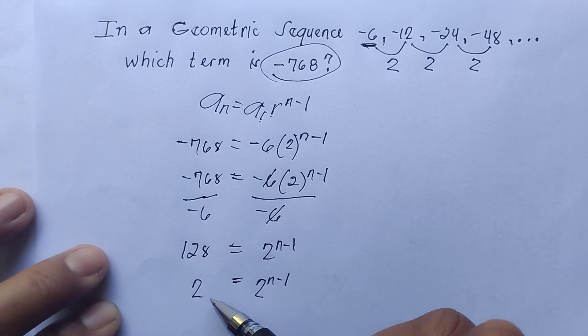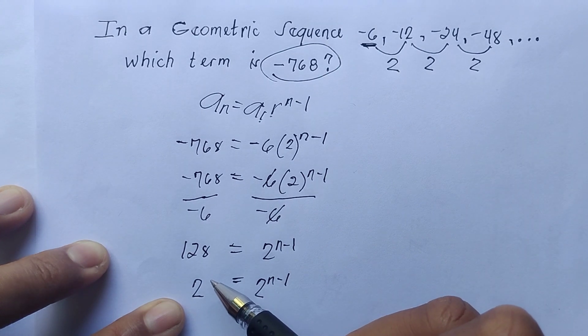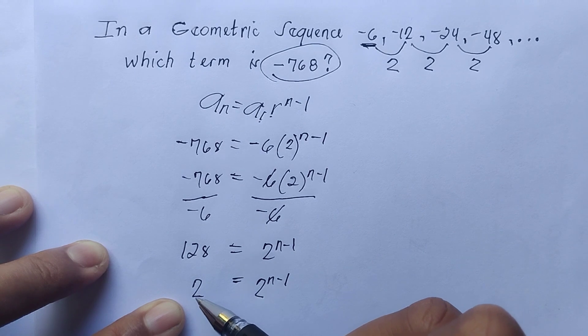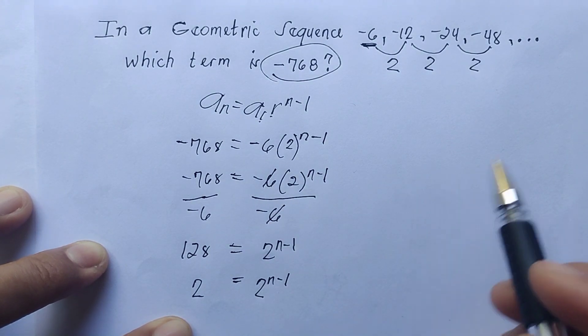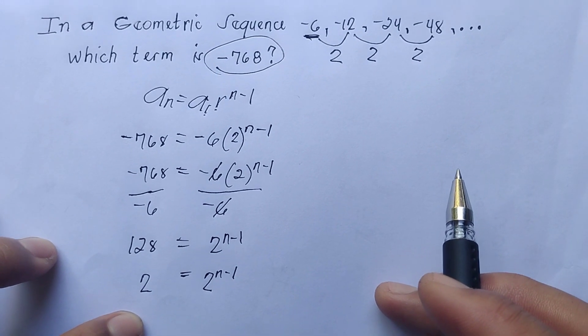After that we need to think of an exponent where if we multiply 2 by itself, the result will be 128. We will try to experiment how many times we need to multiply 2 by itself to get 128.